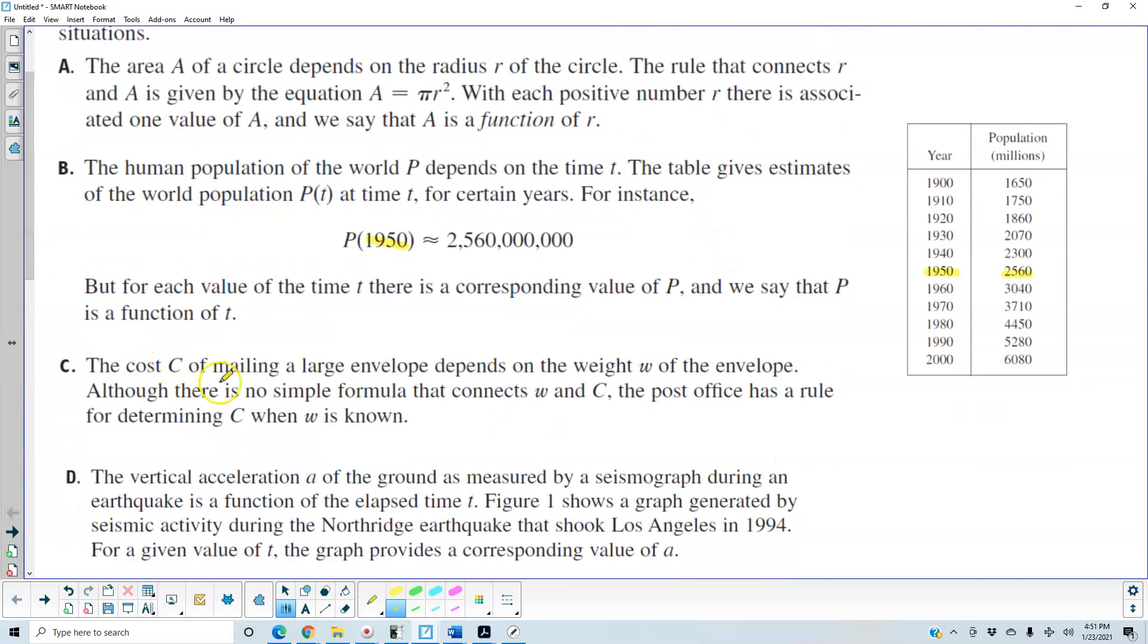Part C: The cost C of mailing a large envelope depends on the weight w of the envelope. Although there is no simple formula that connects w and C, the post office has a rule for determining C when the weight is known.